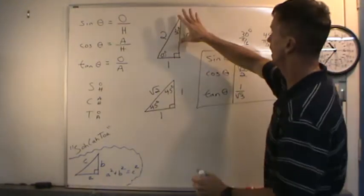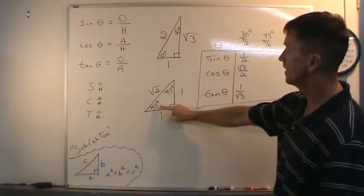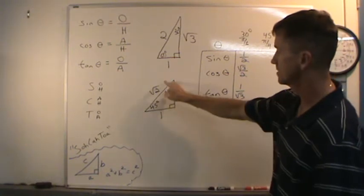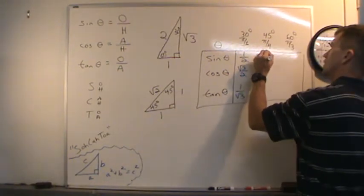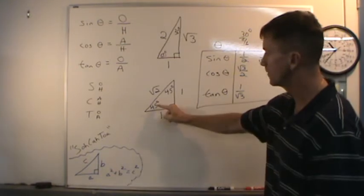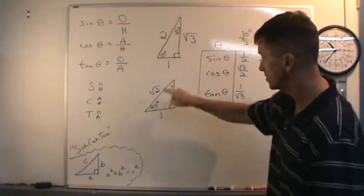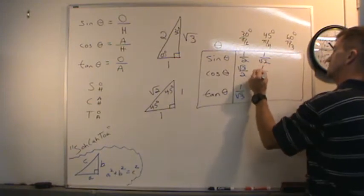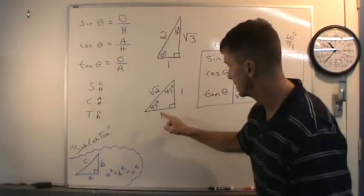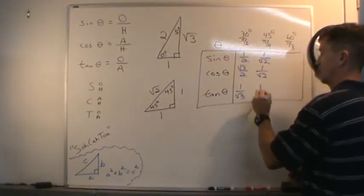For 45 degrees, using this triangle: sine of 45 is opposite over hypotenuse — 1 over the square root of 2. Cosine of 45 degrees is adjacent over hypotenuse — the same ratio, 1 over the square root of 2. Tangent of 45 degrees is opposite over adjacent: 1 over 1, which is just 1.